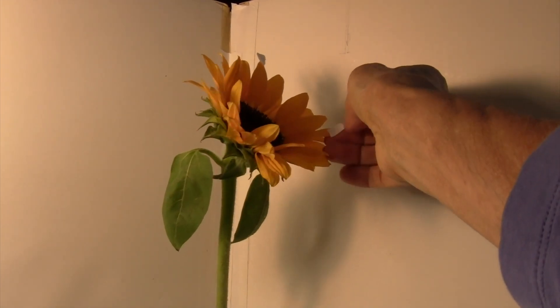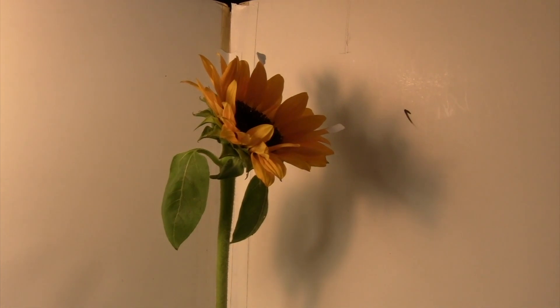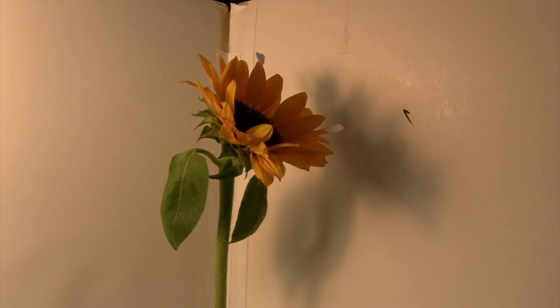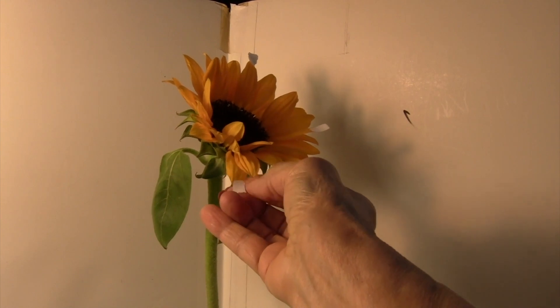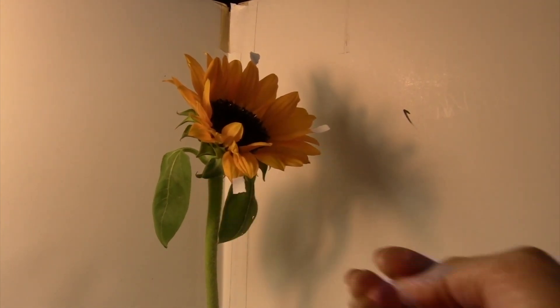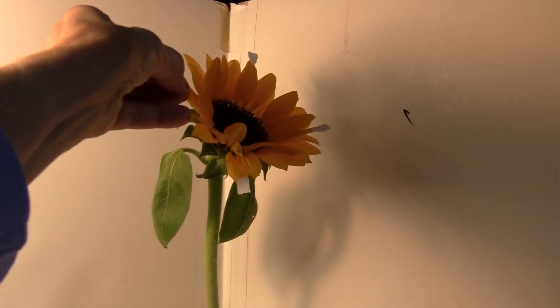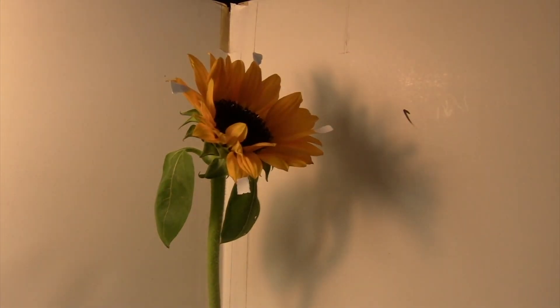This one here will be my 3 o'clock petal. This will be my 6 o'clock petal. And this one will be my 9 o'clock petal. So now I know what I have to draw from. And I can get this drawing started.